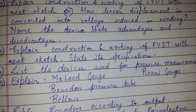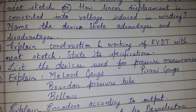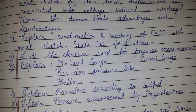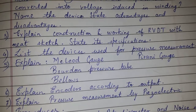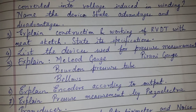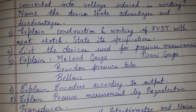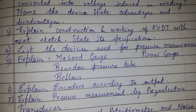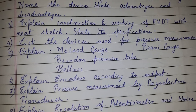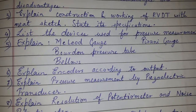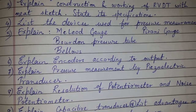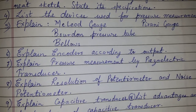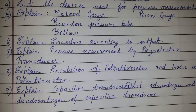Further topics include: explain construction and working of RVDT with a neat sketch, state its specifications, and list the devices used for pressure measurement. Also covered: explain McLeod gauge, Pirani gauge, Bourdon pressure tube, and bellows. Additionally, explain encoders according to output.